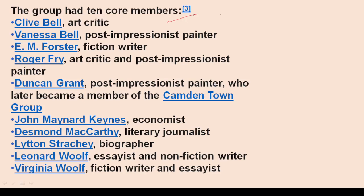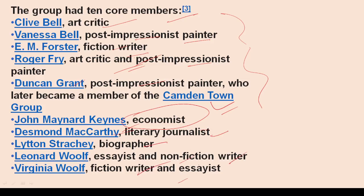Roger Fry was an art critic and painter. Lytton Strachey was a famous biographer — you should know this. Leonard Woolf was a non-fiction writer and essayist. Desmond McCarthy was a literary journalist. The group had 10 core members, and questions can be asked such as who was the economist in the Bloomsbury Group, so you should know all members and their professions. Clive Bell was an art critic; Vanessa Bell was a post-impressionist painter; E.M. Forster was a fiction writer.